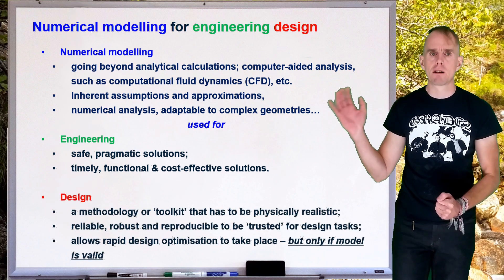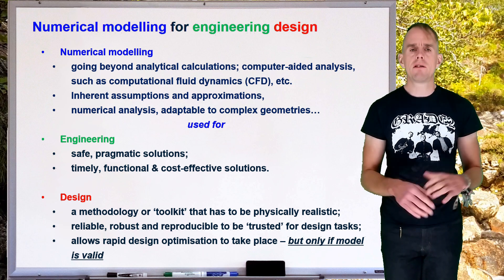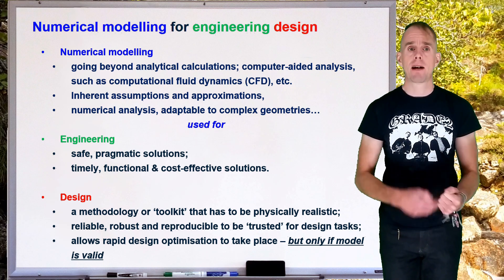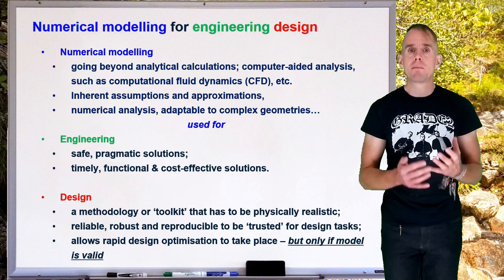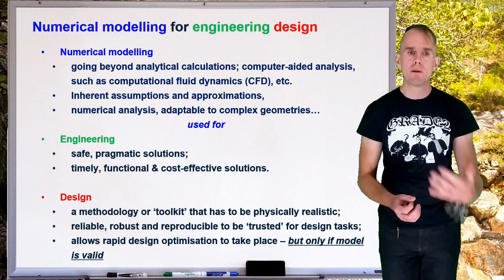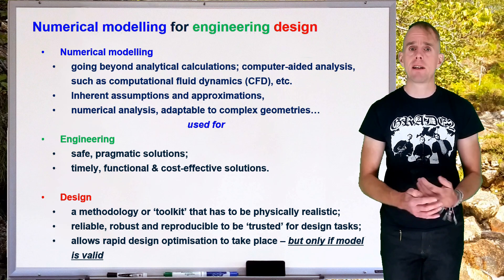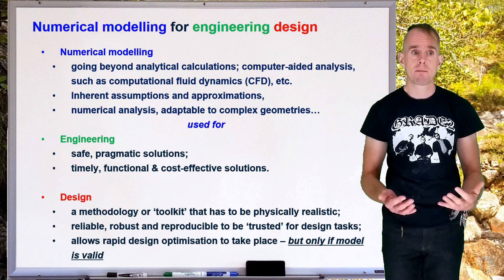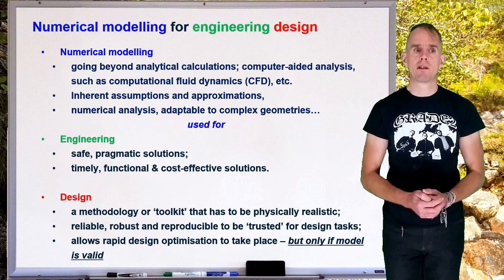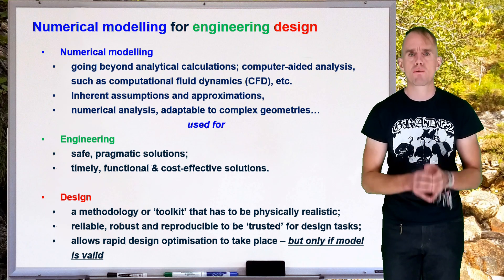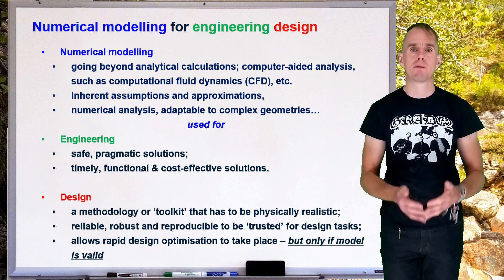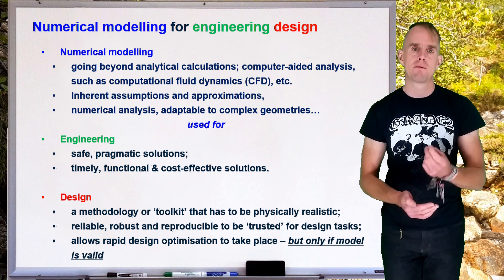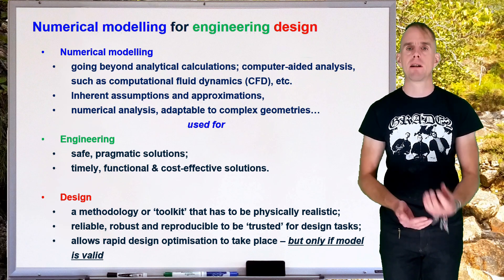Now let's think of this last term because we're using numerical modelling for engineering design. So design is all about using toolkits and methodologies that have to deliver something physically realistic. They have to be reliable, they have to be robust, they have to be reproducible, and they have to be trusted because when a design is first made it will then be reviewed. And if the calculations or the models in that design can't be reproduced at that review stage, then there is no trust in the design which means that it's dead in the water. Now, a successful numerical model for engineering design will allow rapid design optimization to take place. This is incredibly important for modern engineering and is a very powerful tool that computational techniques can offer. But there is a huge caveat only if the model is trusted and validated. And so again, we're coming back to this concept of validation that will crop up many times throughout this course.